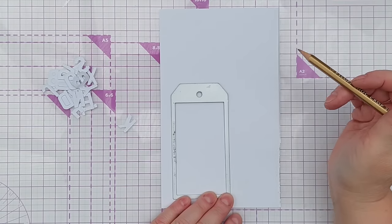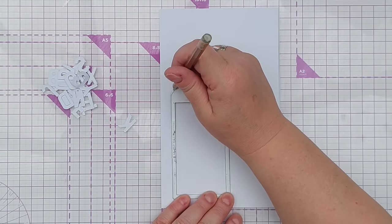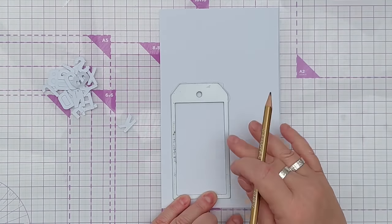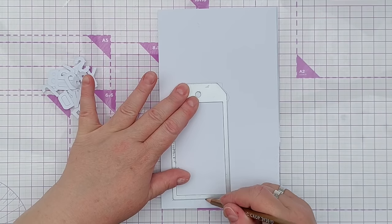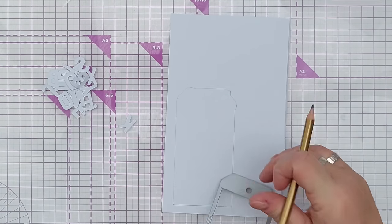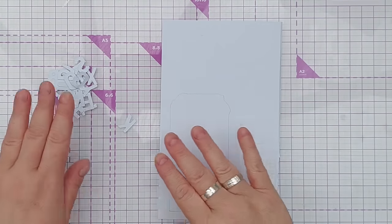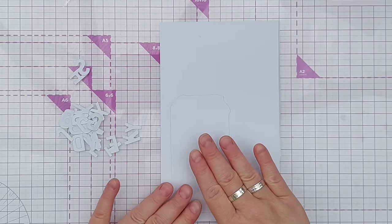So what I want to end up with eventually is a textured tag and this is the tag die that I'm going to use. Just taking another piece of smooth white cardstock, drawing roughly around it, and then I'm going to stick all of these onto here.